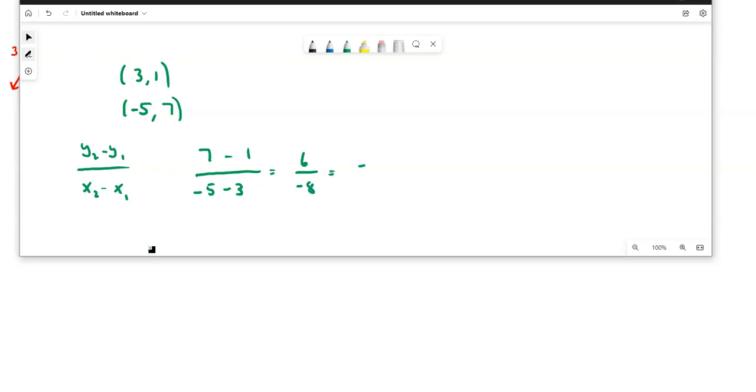It doesn't matter whether the negative sign goes on the top or on the bottom, or you could even put it outside in front of the division bar like this, -3/4, as long as you don't put both of them as negative.